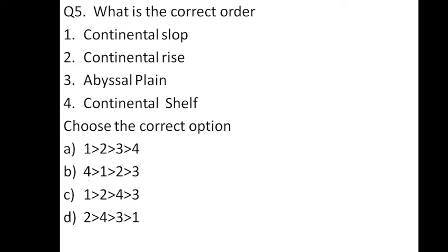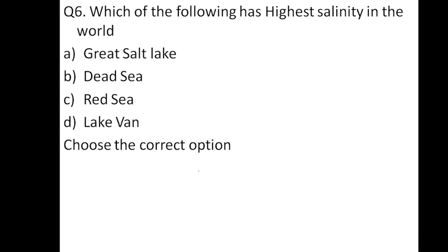Which of the following has the highest salinity in the world? Options: Great Salt Lake, Dead Sea, Red Sea, Lake Van. The correct option is Lake Van. It is in Turkey.